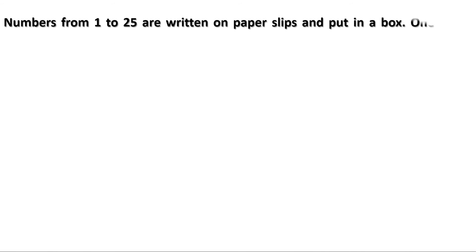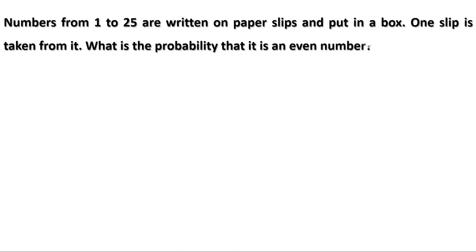Numbers from 1 to 25 are written on paper slips and put in a box. One slip is taken from it. What is the probability that it is an even number? We have to find the probability of getting an even number. The probability of getting an even number is the number of even numbers divided by the total number of numbers.